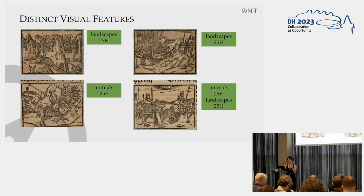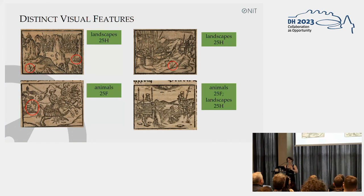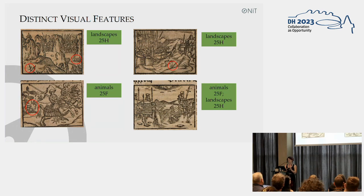I want to show you an example: who of you can spot a representation of a plant in these four images? There are definitely some small representations of plants, and for a data set annotated for historical research purposes, we would annotate those as plants as well. But for the machine learning training data set, this would just be misleading. We're dealing with a multi-label classification problem and need to make sure the data set is as balanced and complete as possible, avoiding too many of the same classes on a single image. This recognition was the result of our discussion processes while annotating the data set.